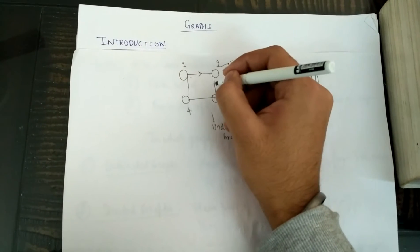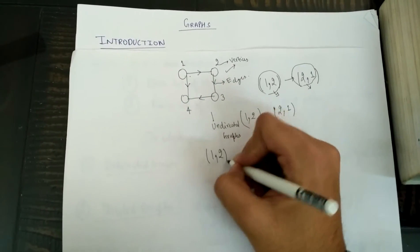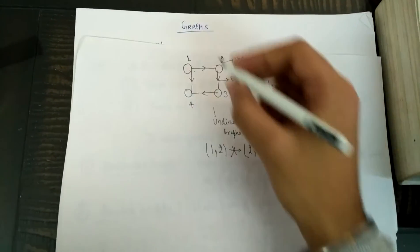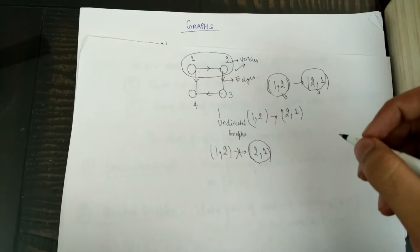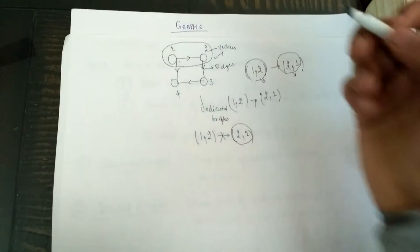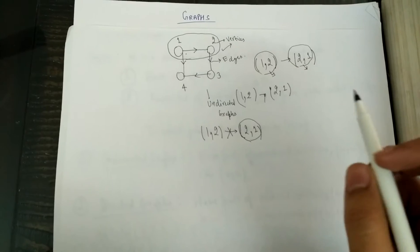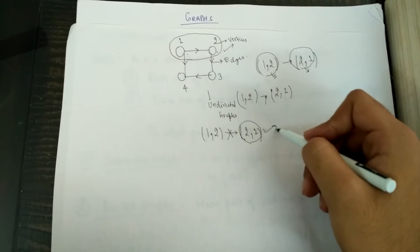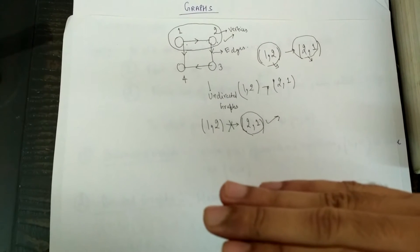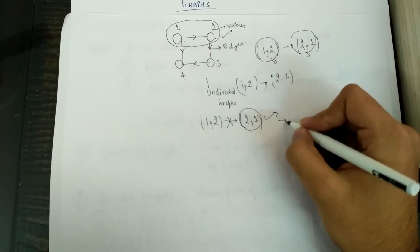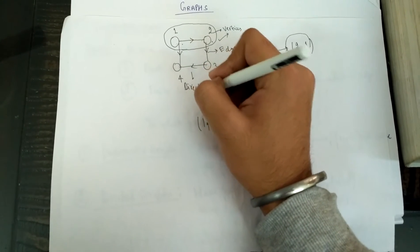If we allot directions to the graph, here 1,2 is not the same as 2,1. You are allowed to go from 1 to 2 — so 1,2 forms an edge — but 2,1 does not form an edge, because you are not allowed to go from 2 to 1. These types of graphs, where you are allowed to go only in the given direction, are called directed graphs. If we allot directions to an undirected graph, it becomes a directed graph.